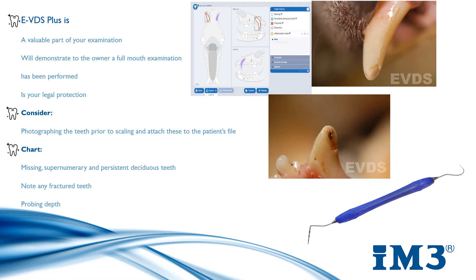We then need to note any furcation exposure — this is the area where the roots diverge in a multi-rooted tooth. We use the explorer end of the ergo-periodontal instrument to palpate any hard dental tissue and detect tooth defects, both supra and subgingivally. This probe allows us to identify fractured teeth. An uncomplicated crown fracture involves enamel and dentine fracture but no exposure to the pulp cavity, whereas a complicated crown fracture means the pulp cavity is actually exposed.